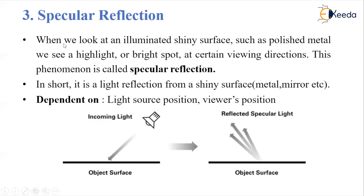Third is specular reflection. When we look at an illuminated shiny surface such as polished metal, we see a highlight or a bright spot at certain viewing directions. This phenomenon is called specular reflection — light falls on a shiny surface, such as metal or a mirror, and when it falls on the object surface, it reflects in a particular direction. It is dependent on the light source position and the viewer's position.